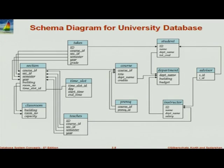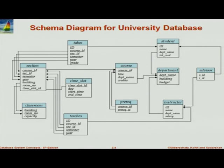And then you have courses. You have departments in between student and instructor. This is grossly simplified. For our purposes, a department has a name and a building — which again is not very realistic. Our computer science department here lives in three buildings as of now, and it should reduce to two later. But here we are assuming there's a single building, and there's a budget.